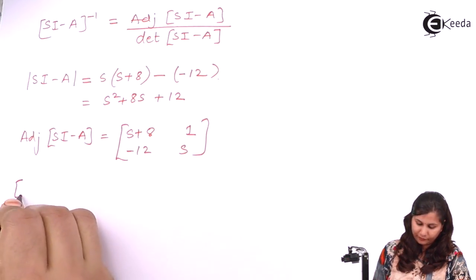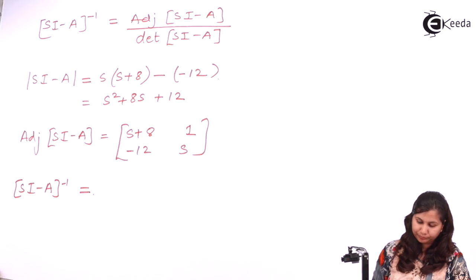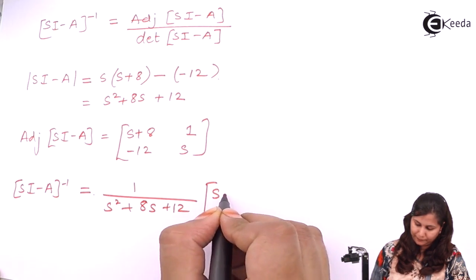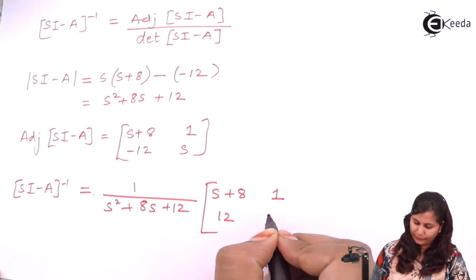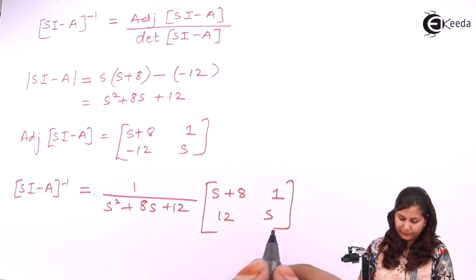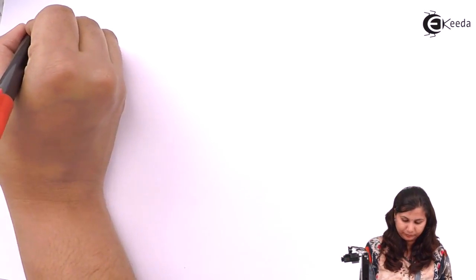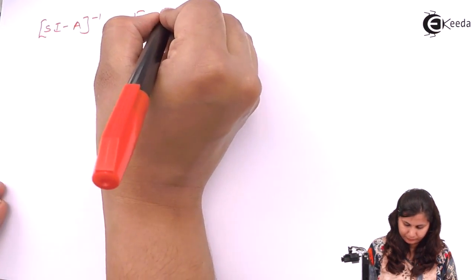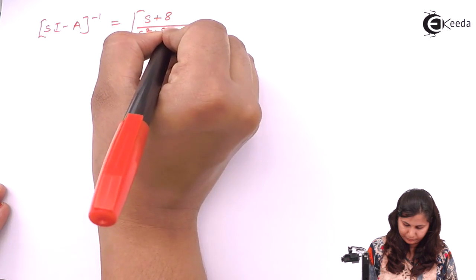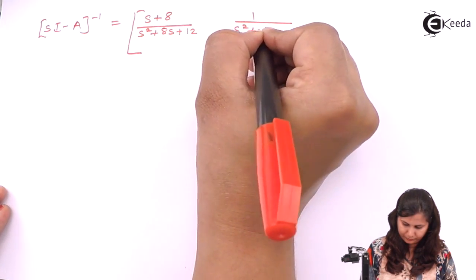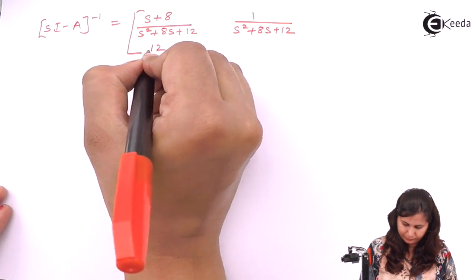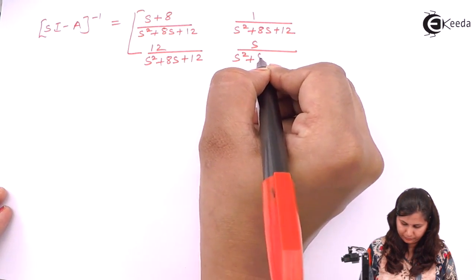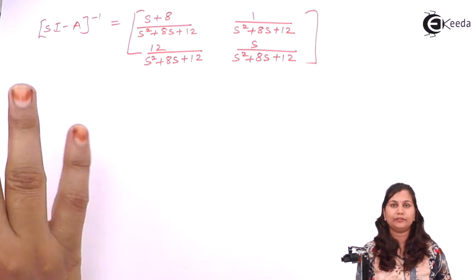So (sI - A) inverse equals 1/(s² + 8s + 12) multiplied by the adjoint matrix [s+8, 1; -12, s]. This is the value of the inverse.